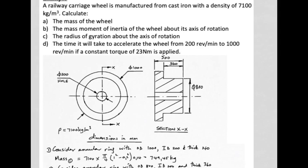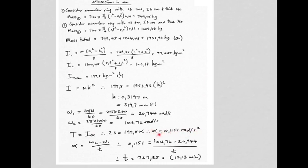We were also asked to find the time to accelerate the wheel from one angular speed to another with a constant applied torque of 23 N·m. Using T = Iα, we find alpha = 0.1151 rad/s². Then using alpha = (omega₂ − omega₁)/t, the time required is 727.85 seconds, which is 12.13 minutes.